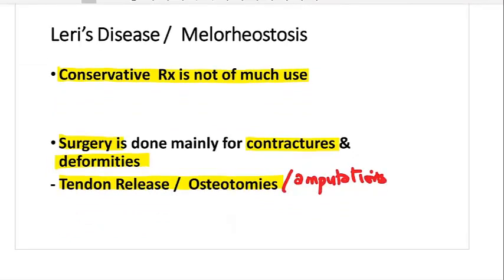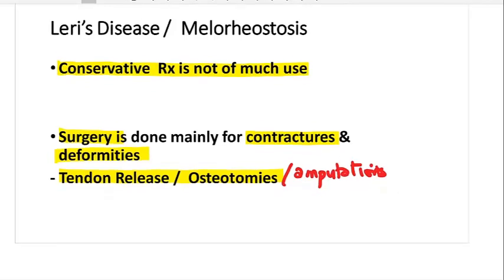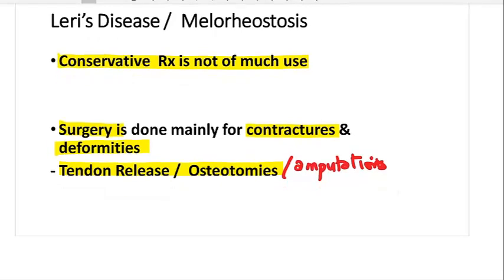To summarize: DISH affects elderly males, with stiffness of the spine, and mainly involves the axial skeleton. Larry's disease or melorheostosis is seen in later adolescence or early adulthood, affecting the appendicular skeleton — particularly the long bones. In DISH, we have flowing ossification of the anterior longitudinal ligament; in melorheostosis, we have flowing candle wax in long bones. Enthesitis is also a very important feature of DISH. I hope this video gives you an insight into these two relatively uncommon orthopedic disorders.